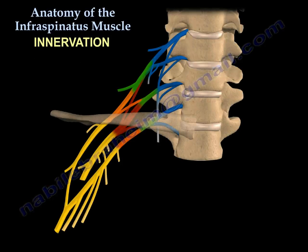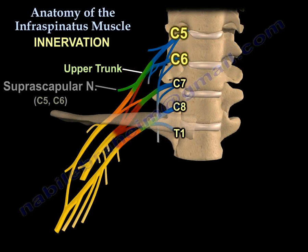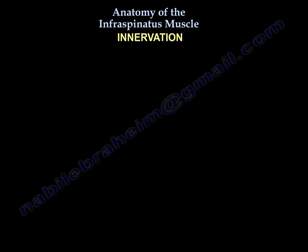Infraspinatus innervation: it is innervated from the upper trunk, C5 and C6. There is only one nerve, one branch, that comes out of the upper trunk — that is the suprascapular nerve. Here is a detailed explanation of the course and innervation of this nerve.